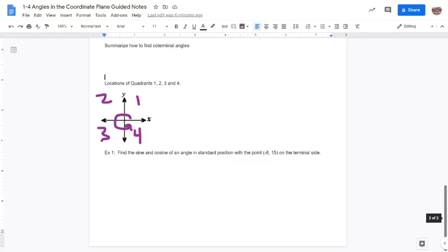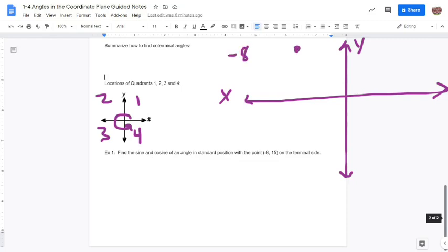So this first and last example here is find the sine and cosine of an angle in standard position with the point negative 8, 15 on its terminal side. So I'm going to start off here by drawing a y-axis and an x-axis, and I'm going to plot the point negative 8, 15. So it doesn't have to be perfect, but it would be somewhere around here. So that would be at negative 8, 15. Now I'm going to draw the angle in standard position. So the initial side goes on the positive x-axis. The vertex goes on the origin, and this would be the terminal side.